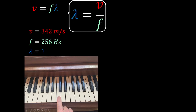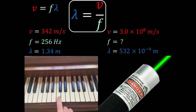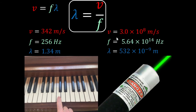Rearranging V = fλ and solving for wavelength gives us an equation on our equation sheet. For example, if you hit middle C on the piano, a string vibrates 256 times a second. Sound travels around 342 meters per second. Velocity divided by frequency gives the wavelength of the sound waves. A green laser emits light with a wavelength of 532 nanometers — 532 × 10⁻⁹ meters. Light travels at the speed of light, 3.0 × 10⁸ meters per second. Plugging into the equation gives a very high frequency.